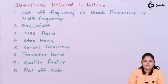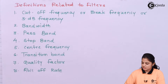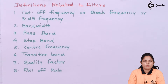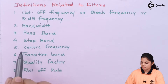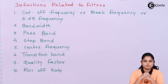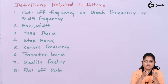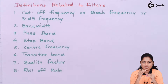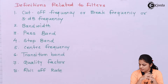Third is pass band — the range of frequencies which are allowed to pass through the filter. Then you have stop band — the frequency range which is stopped or blocked by the filter. Then you have center frequency, which is the frequency where the maximum gain occurs. Transition band is where the gain transitions from high to low or low to high, that is from one state to another state.